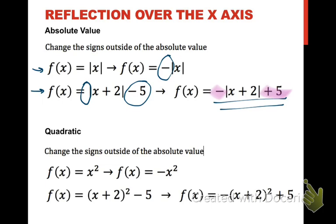For quadratics, same thing. Parent function goes from x² to a negative x². And if I have more things going on, like in this second example, I don't do anything with that x + 2, but I do change the sign of the outside.